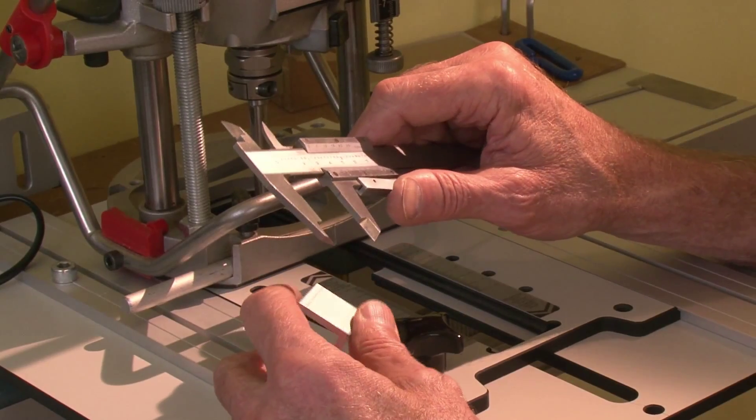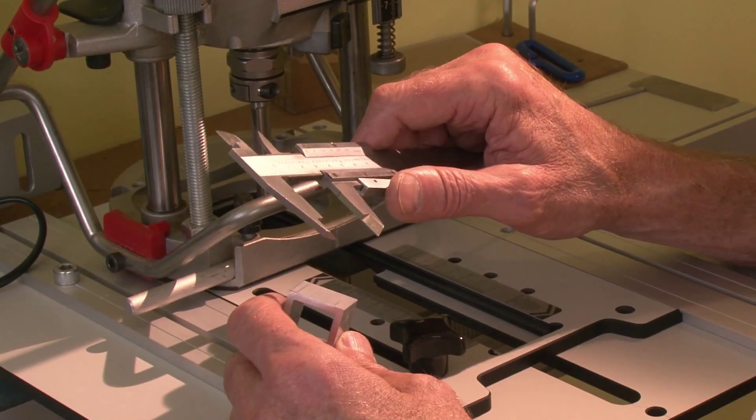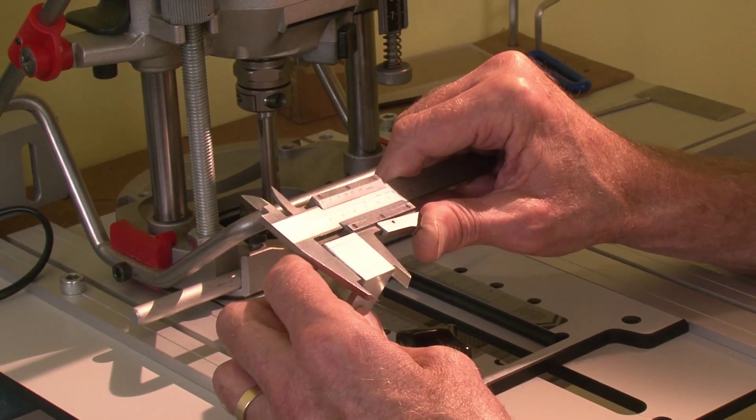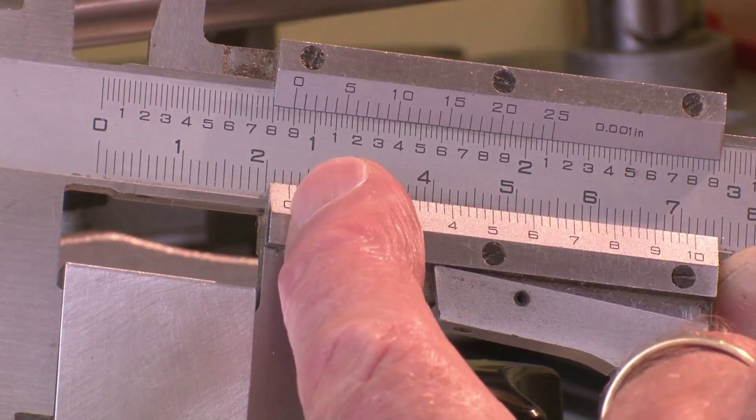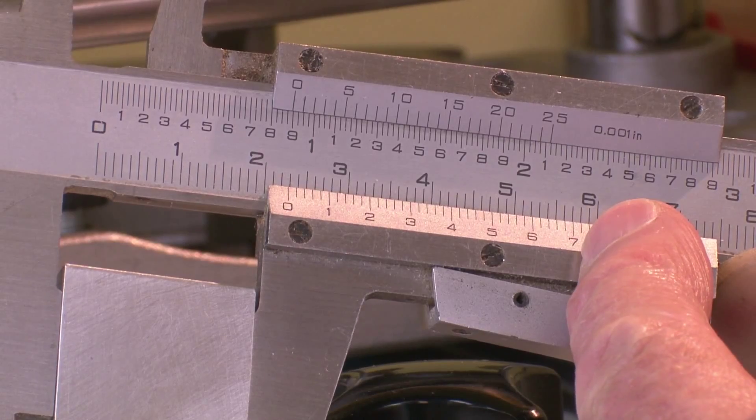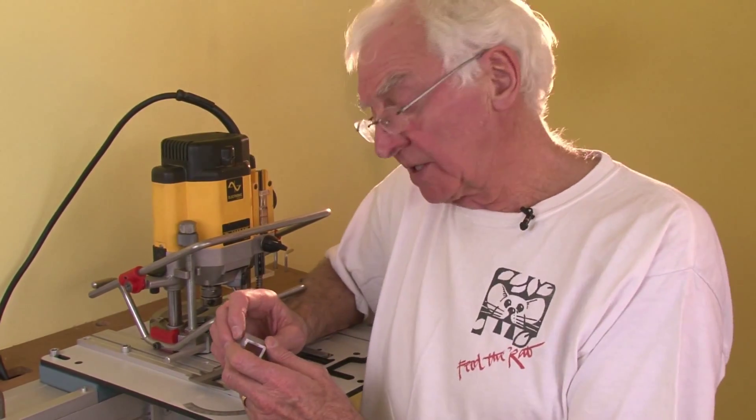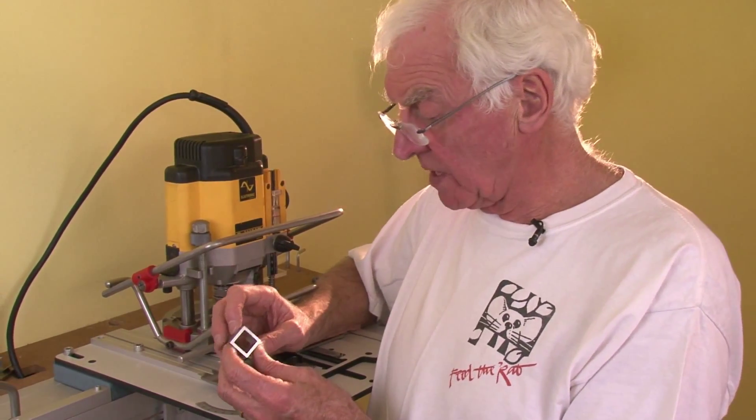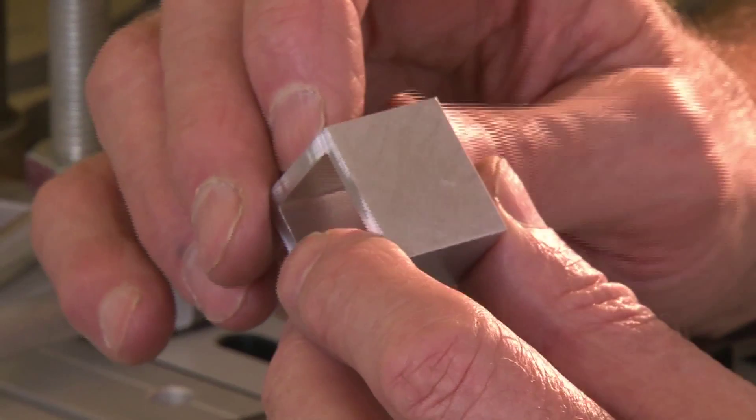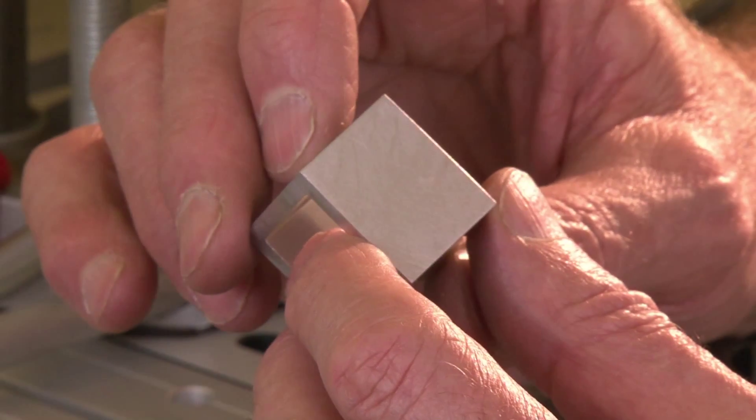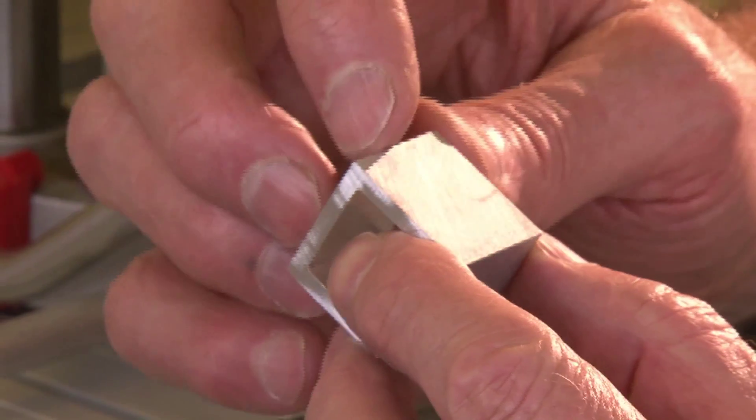Now comes the clever bit. Instead of measuring it, we put a block of something that physically goes between the two positions, that measures 22.7mm across. I have made blocks in wood, but wood shrinks and moves, as you well know, and so I have made this out of a 1-inch square aluminum tube, and I have cut off a length of it and finished it with wet and dry on a flat surface to exactly 22.7mm.